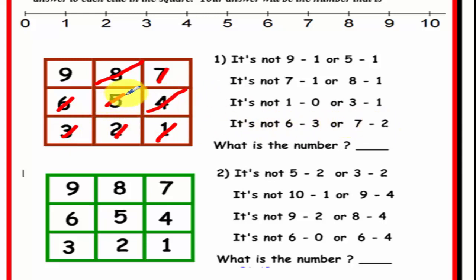So that's 3, or 3 minus 2 is 1, or 10 minus 1 is 9, and 9 minus 4 is 5. 9 minus 2 is 7. 8 minus 4 is 4. 6 minus 0 is 6, and 6 minus 4 is 2. So the answer you should have here is the number 8.